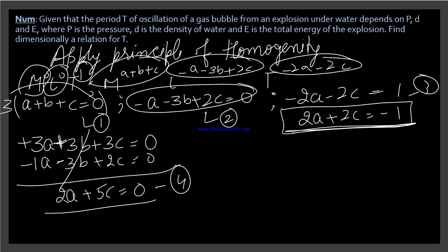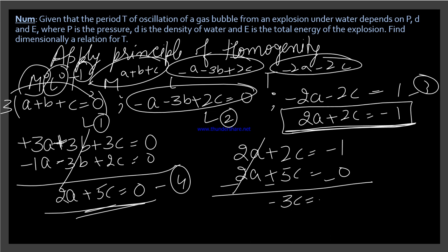And this is our fourth. Now compare second and third. So here what came? 2a plus 2c equals minus 1. This answer: 2a plus 5c equals 0. Now change the sign. When you change the sign, both cancel. Here we get minus 3c equals minus 1.